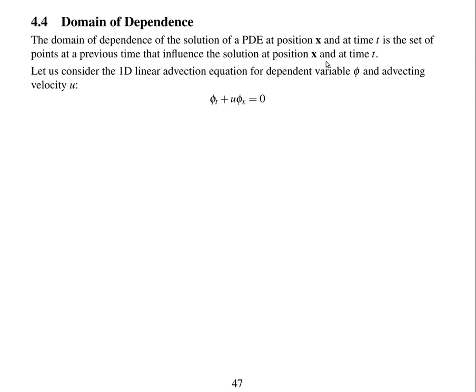If we consider the one-dimensional linear advection equation for dependent variable phi and advecting velocity u — that's d phi by dt plus u times d phi by dx equals zero — we know the analytical solution for this equation, assuming uniform constant velocity u. You can pause the video and look back in the notes to fill in the analytical solution before I continue.